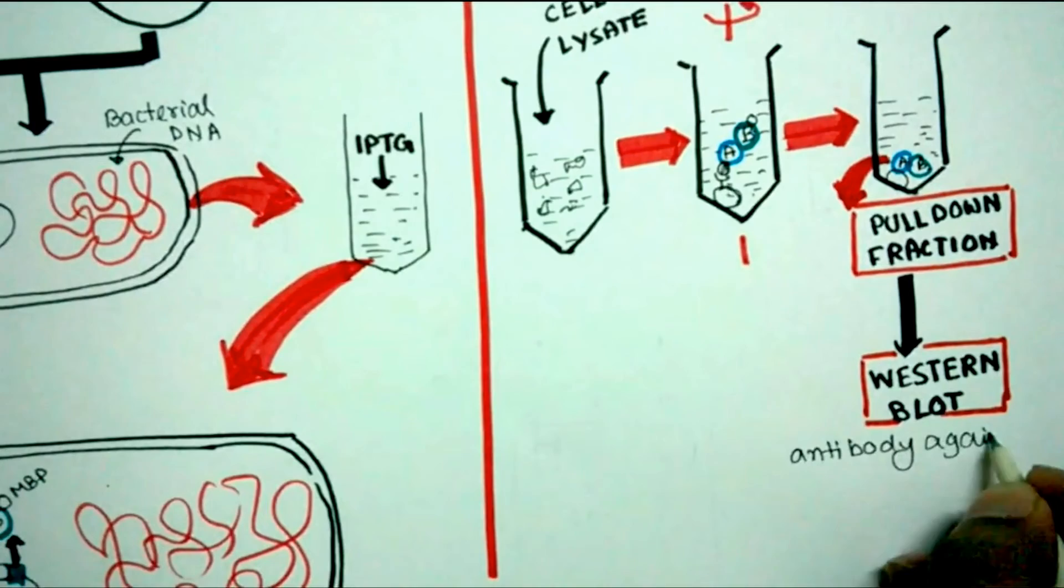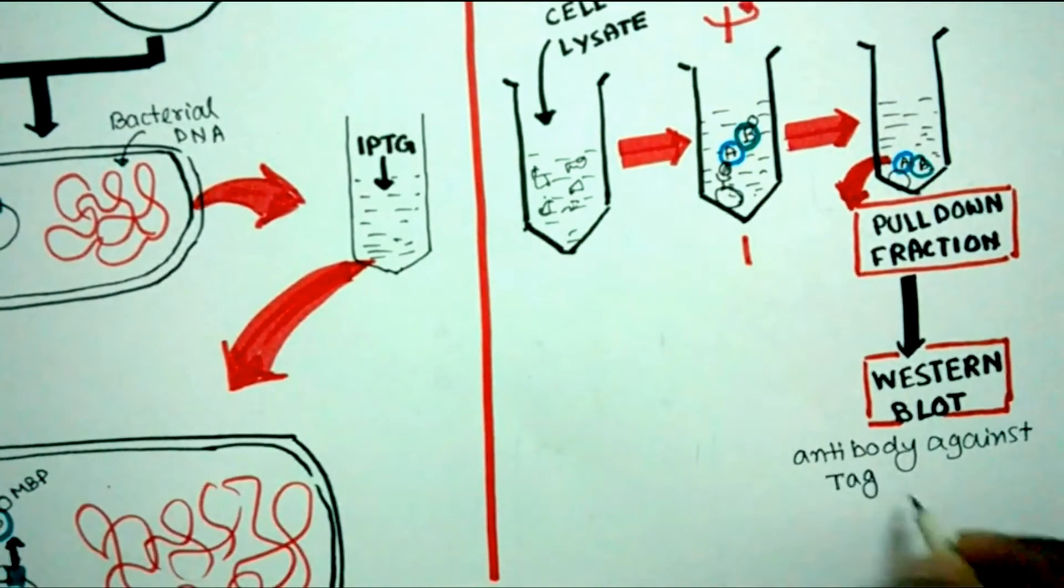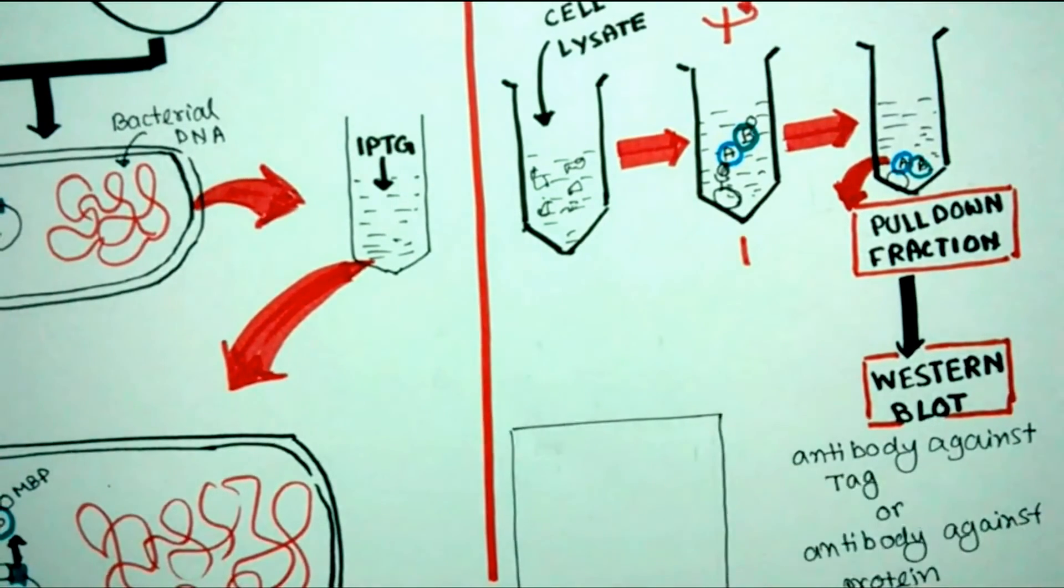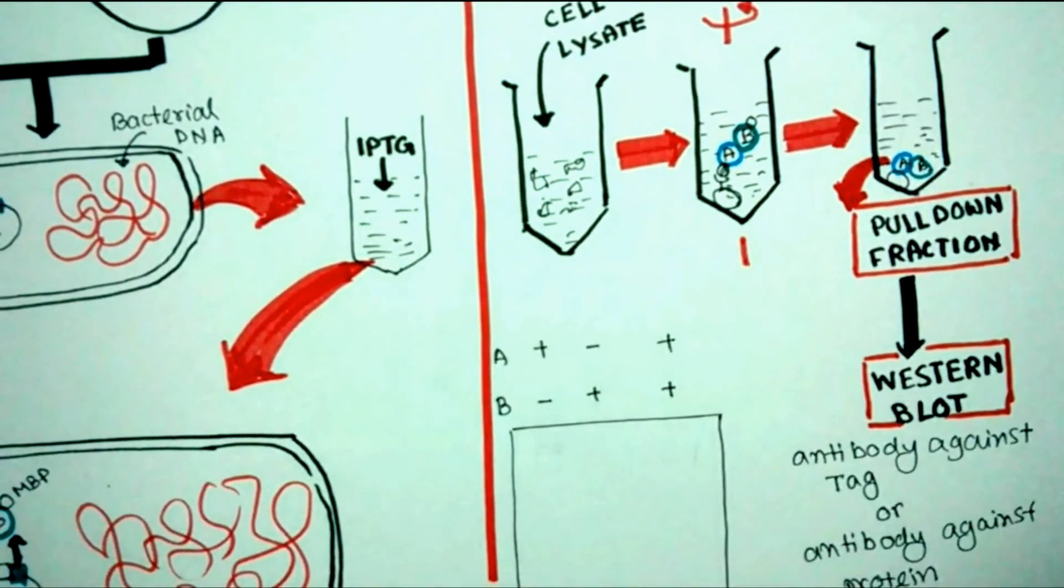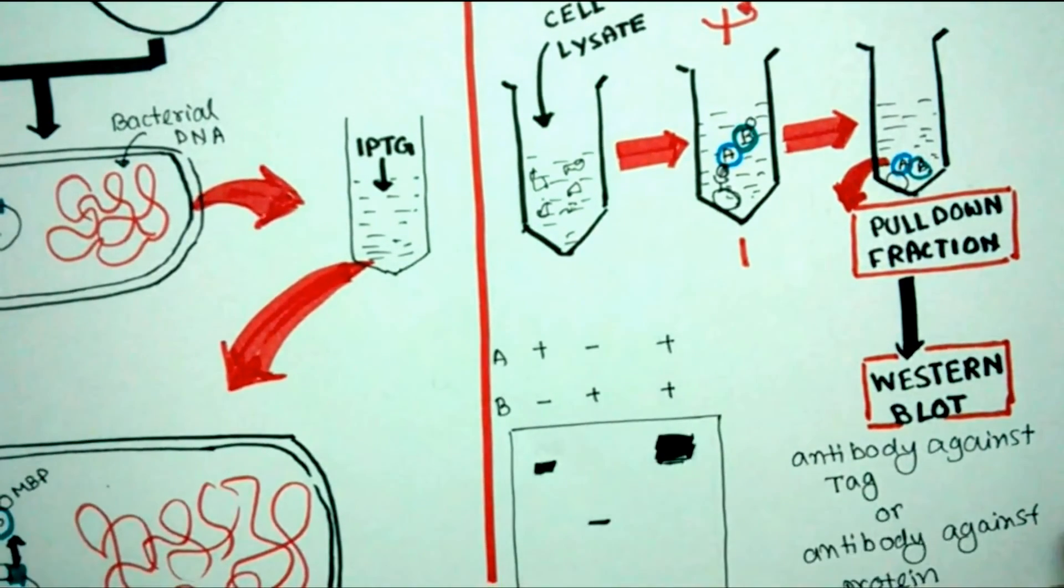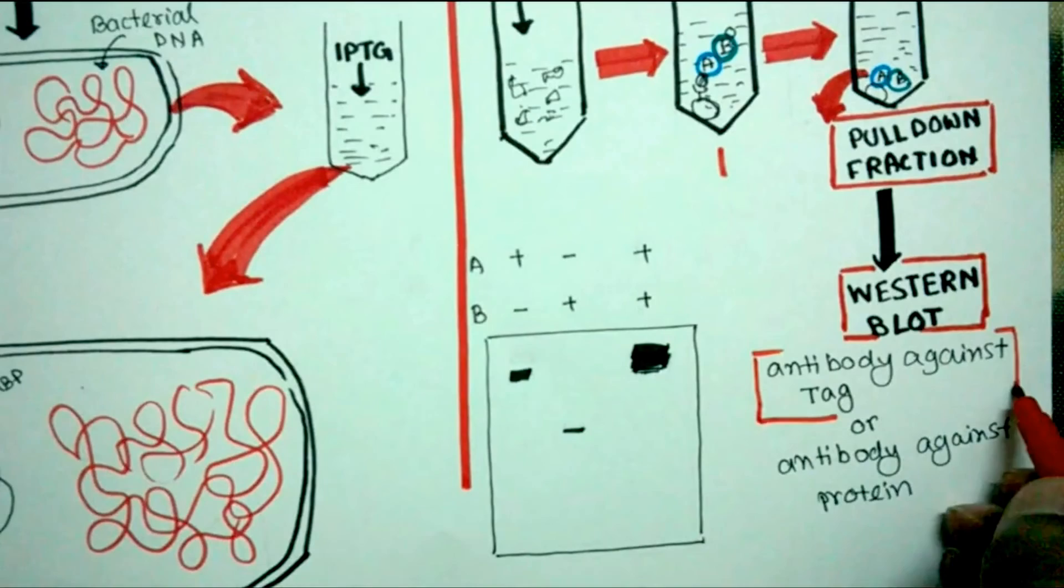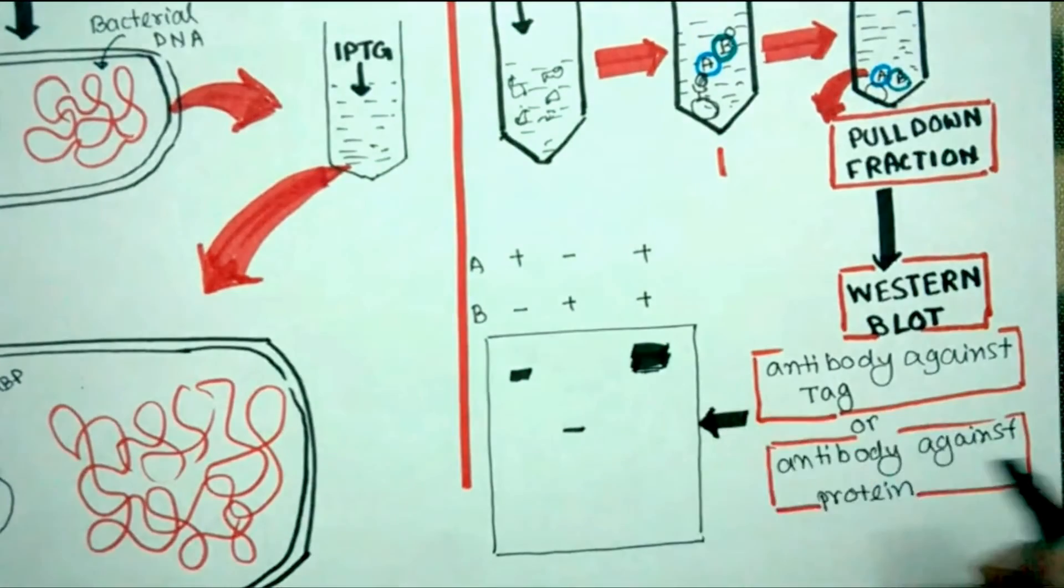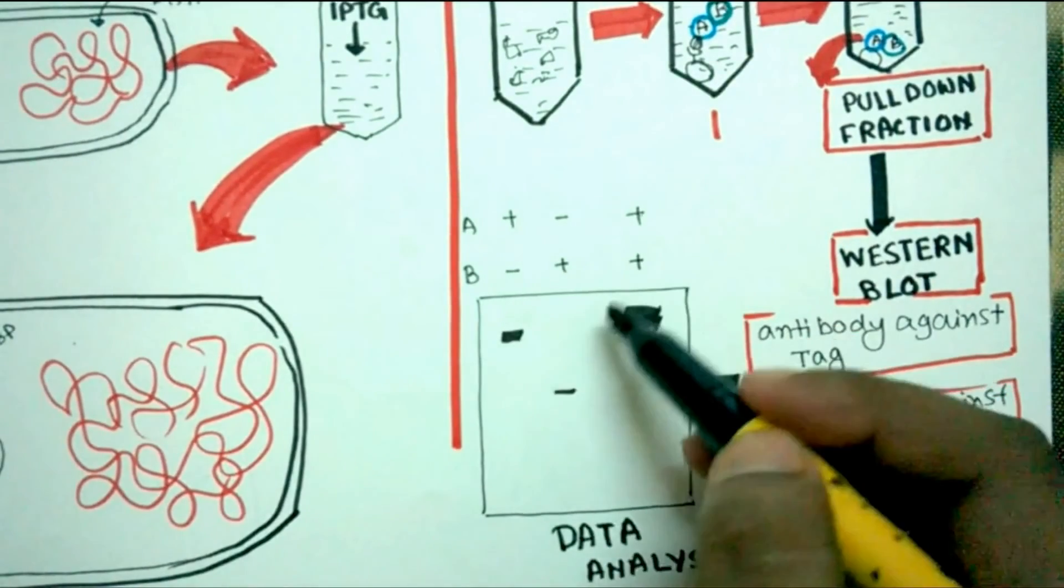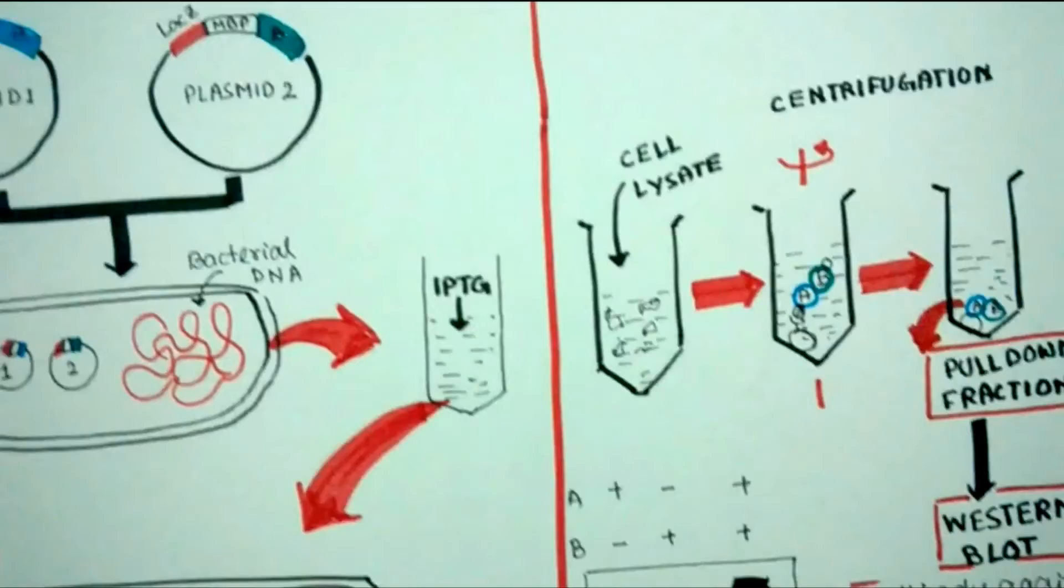Then we run the gel, do a Western blot, and we can use antibody against the tag or antibody against the protein. In the third lane when both A and B are present we get a strong band, meaning A and B are interacting with each other. This is how we can understand whether A and B are interacting or not.